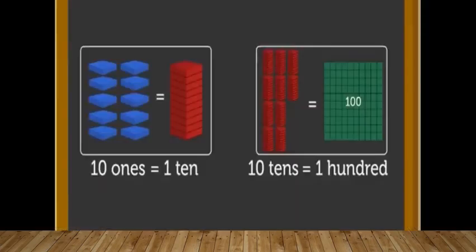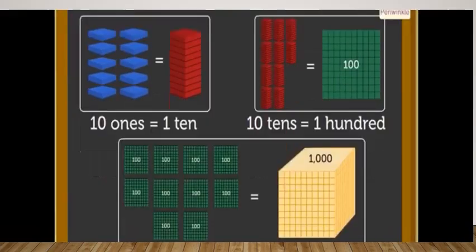You have learned in previous classes that 10 ones equals 1 ten and 10 tens equals 100. Now we are going to learn some more things. 10 hundreds equals 1000.